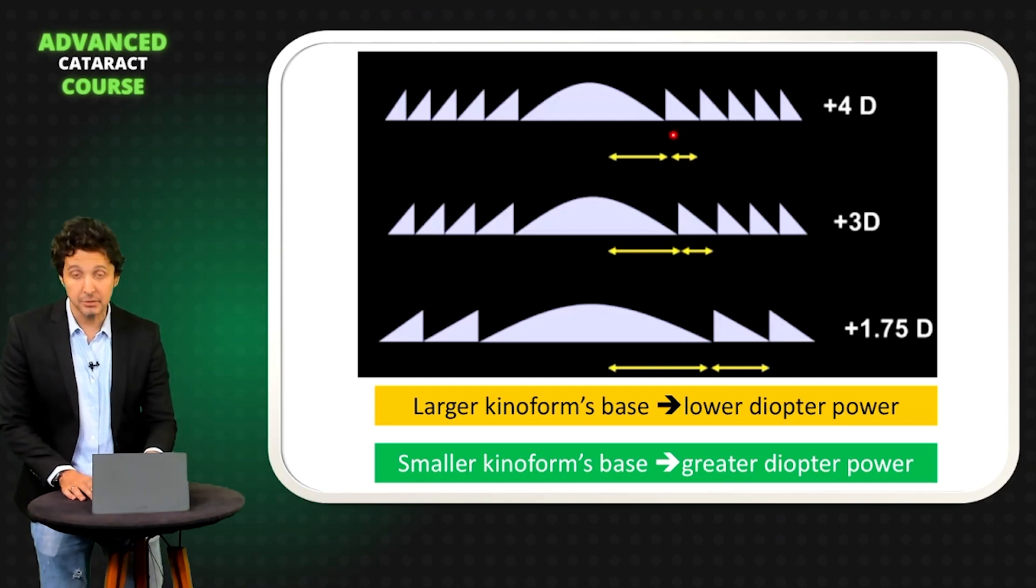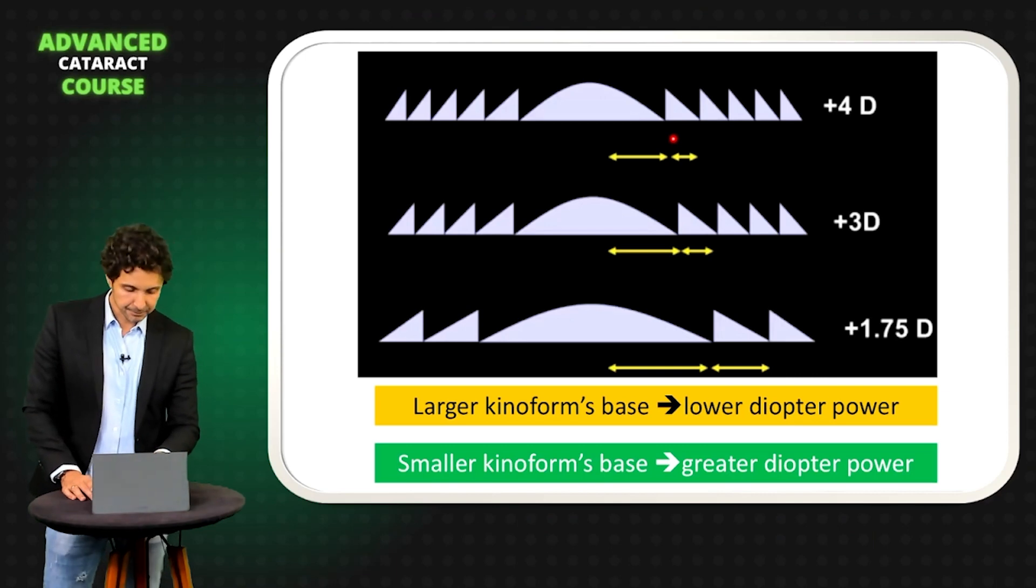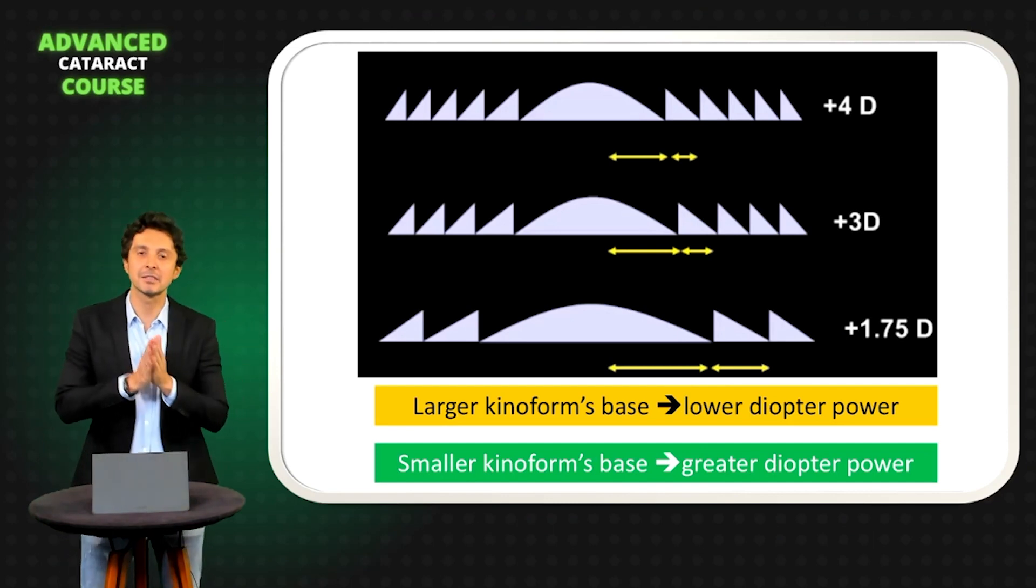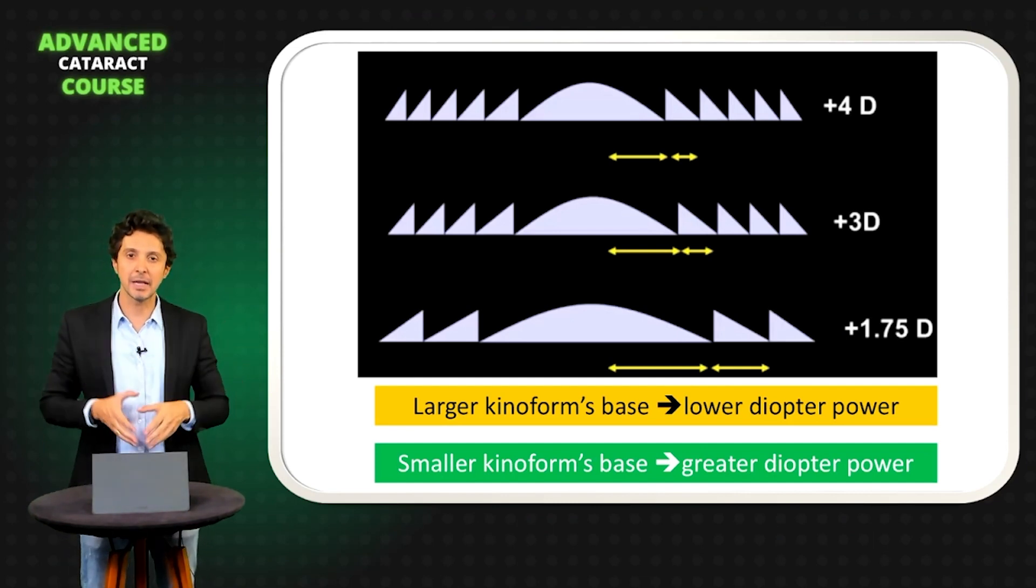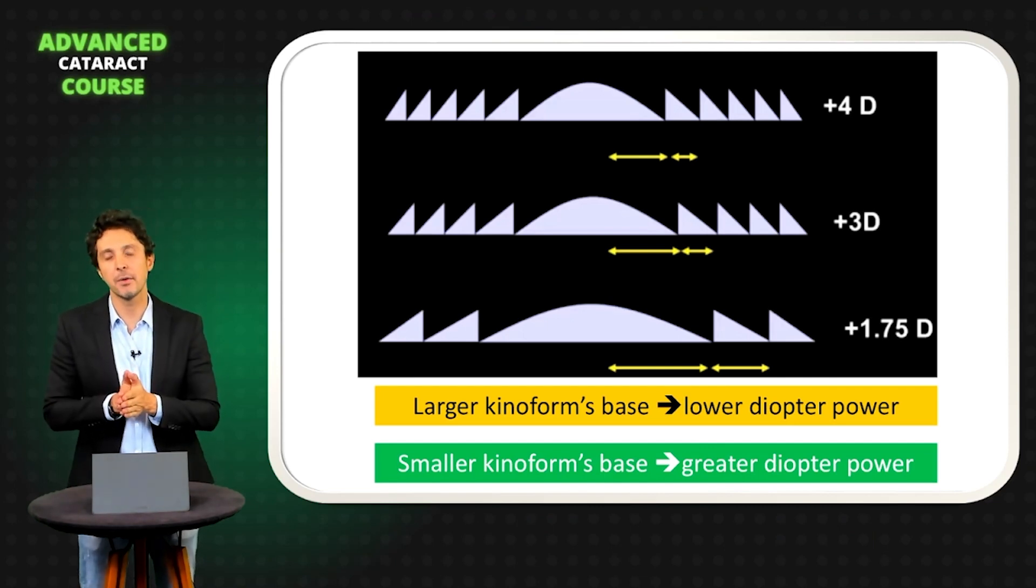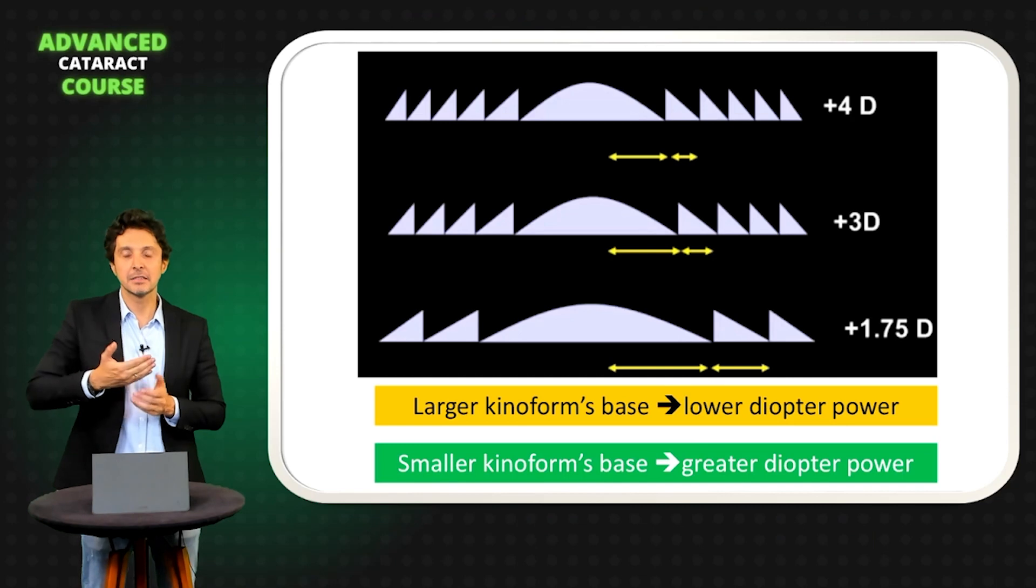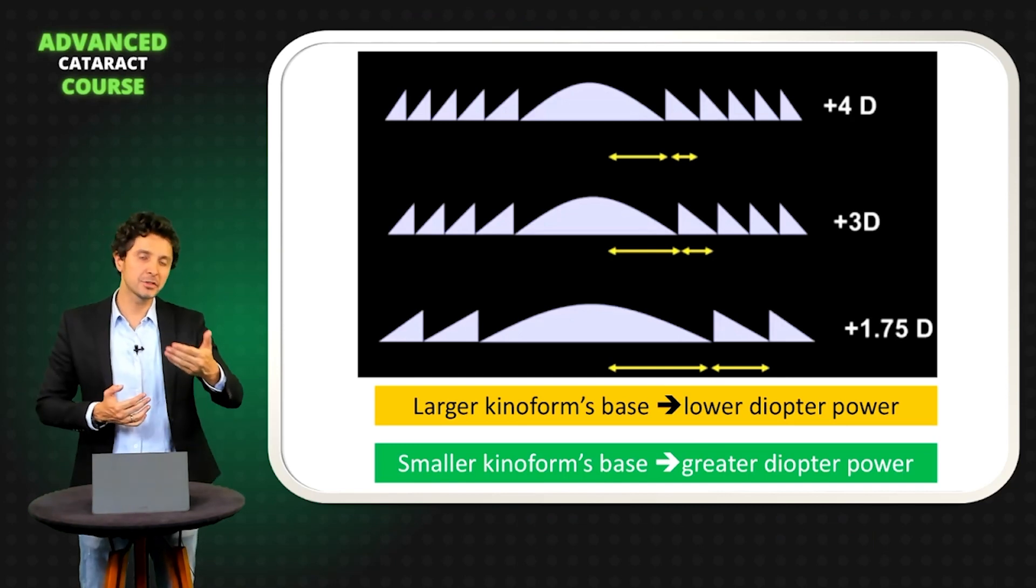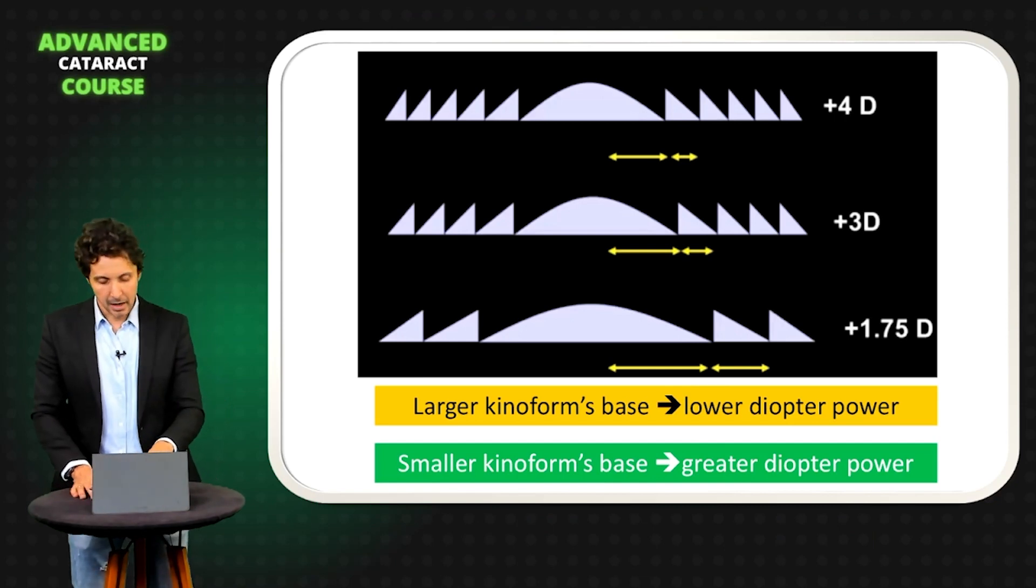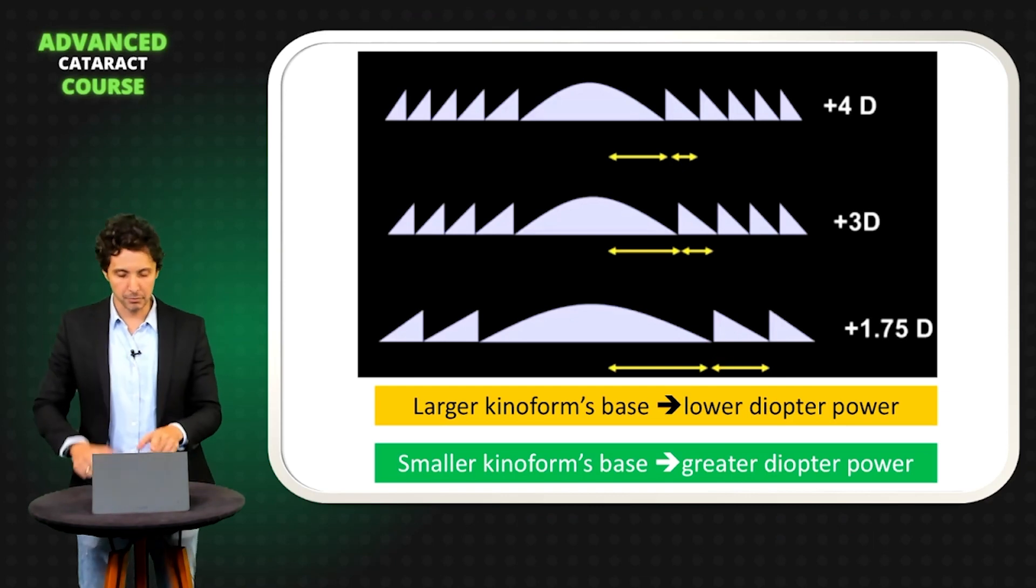Observe this one, 3 diopter. And observe this base, smaller. Smaller kinoform base, smaller diffractive rings equals greater diopter power. This is the most important point that I want you to understand today about how to produce a trifocal IOL with far, near, intermediate. So if you want your patient to read at intermediate, you need a larger kinoform, large base. This is the first rule.